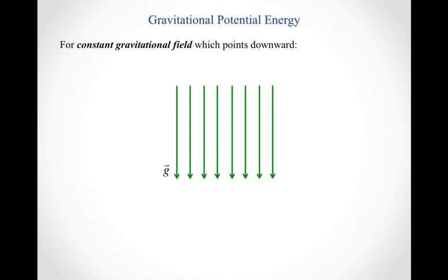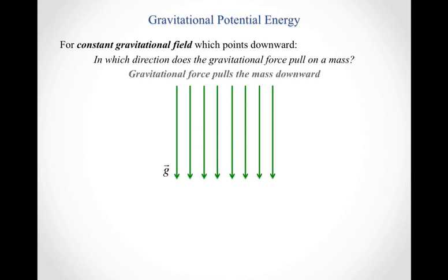To set up gravitational potential energy, let's start by remembering what we learned about the work done by the gravitational force. When you have an object that sits in a constant gravitational field, the gravitational force is going to pull the mass downward. It has a magnitude of mg, and so when the object moves down, the gravitational force does positive work.